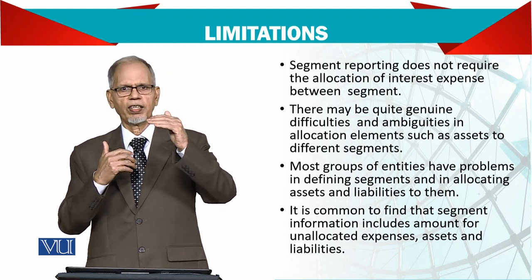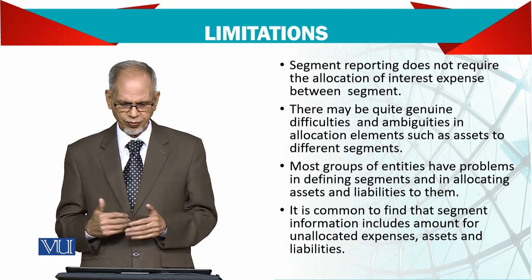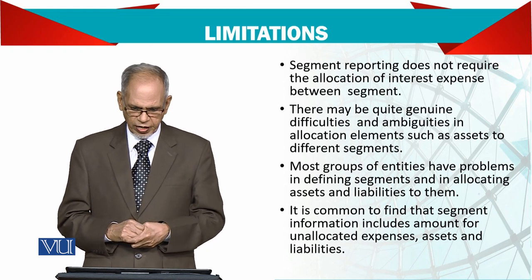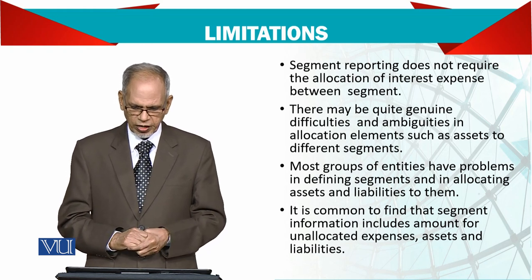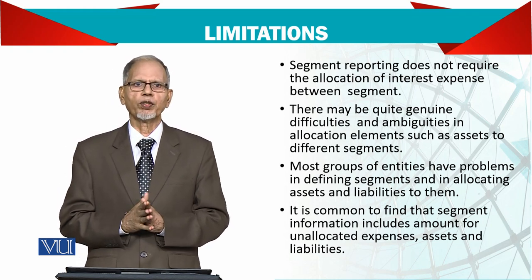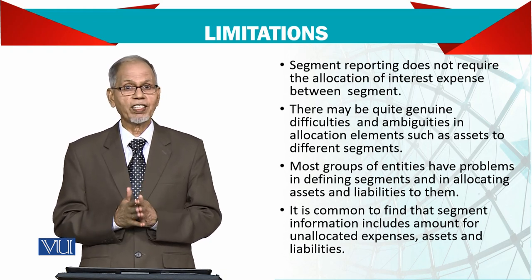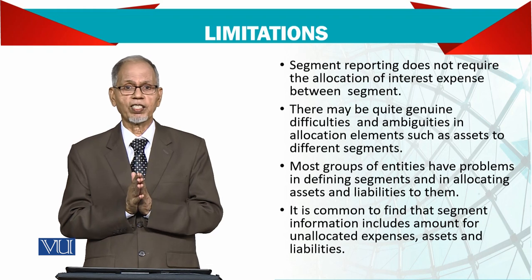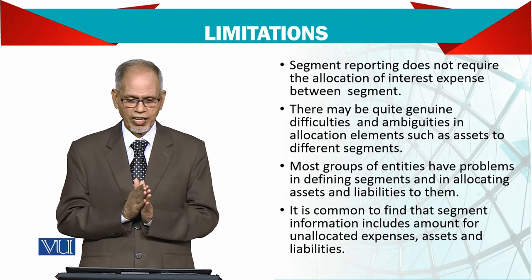If Company A holds Companies B and C, we want to see how B and C are performing. When defining segments and allocating assets and liabilities, segment information will often include amounts for unallocated expenses, assets, and liabilities. When preparing the segment report, we must show any unallocated items, because at the end of the day we need to reconcile the total assets and liabilities of the whole business across Segment A, B, and C.